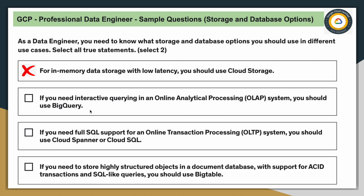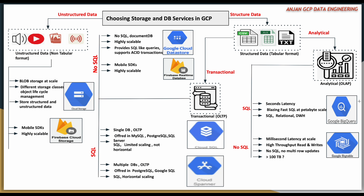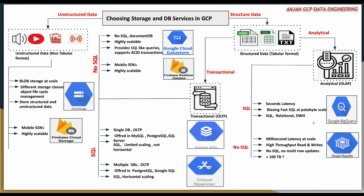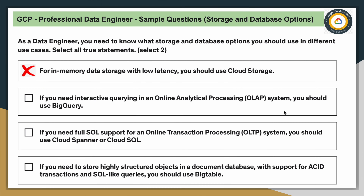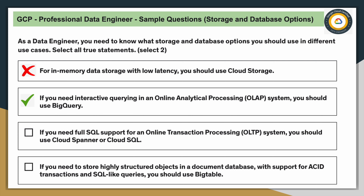Option two: if you need interactive querying in an online analytical processing (OLAP) system, you should use BigQuery. Looking at the diagram, BigQuery falls under analytical storage services. You can query data interactively using SQL at petabyte scale with second-level latency — this definitely covers OLAP use cases. This is a correct option.